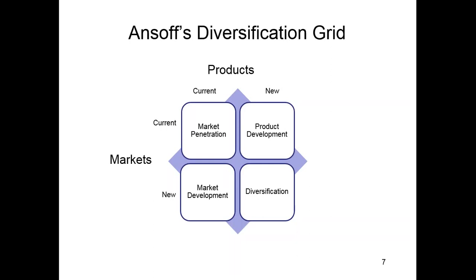Below the line, current products in new markets typically means moving from one city or country to another. McDonald's originally started in the USA but is now global — they found new markets and expanded into them. Al Baik in Saudi Arabia is another example, moving from one area of Jeddah to many different places in the Western province. Finally, new products in new markets means diversification — for example, motor car companies building SUV and four-wheel-drive models tailored to markets where there is specific demand for those vehicles.